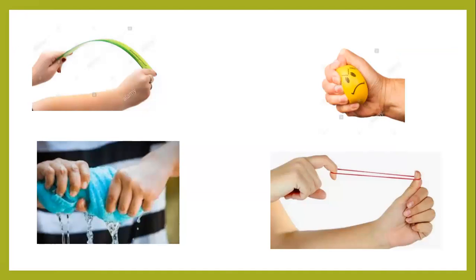Here are four common examples. These materials are very soft so you can change them by your hands. Look at the ruler — it is flexible, so you can change it by bending. Look at this example — you can change it by squashing. Look at the towel — it is twisted by hands, that is twisting. Look at the rubber band — it is flexible and soft, so you stretch it. So the four ways are: bending, squashing, twisting, and stretching.